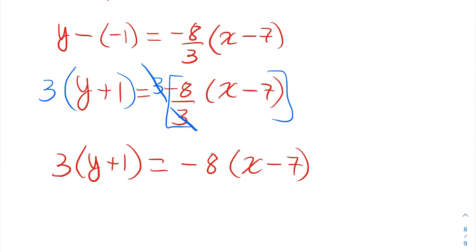So we have our equation. Let's put it in standard form, ax plus by equals c. To do that, we need to get rid of the parentheses. So I distribute and get 3y plus 3. I distribute over here and get -8x plus 56.